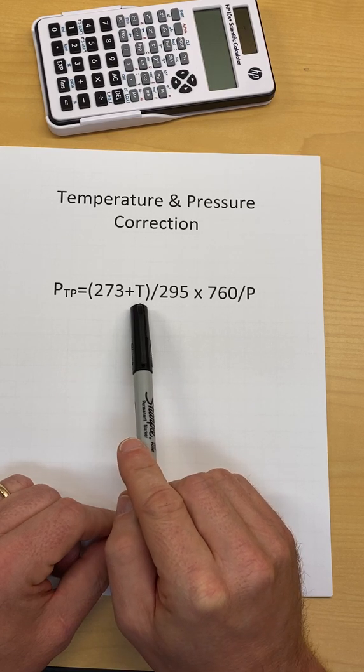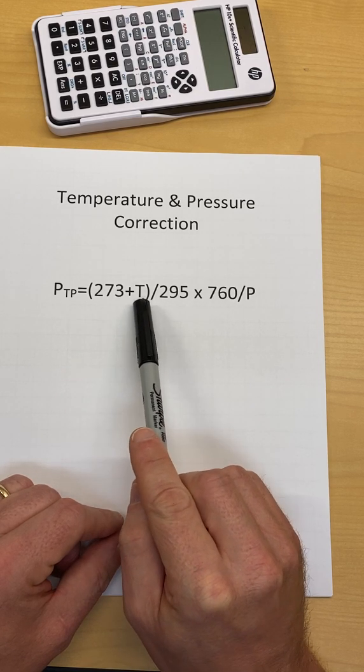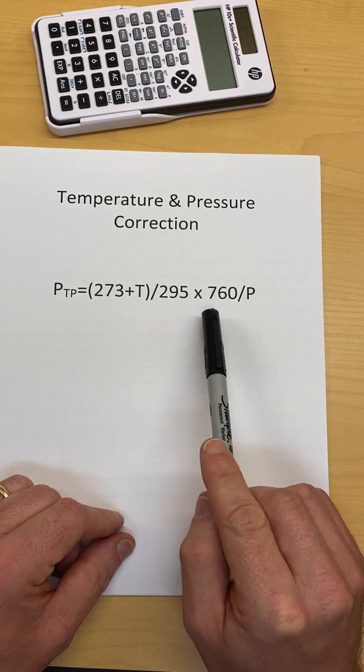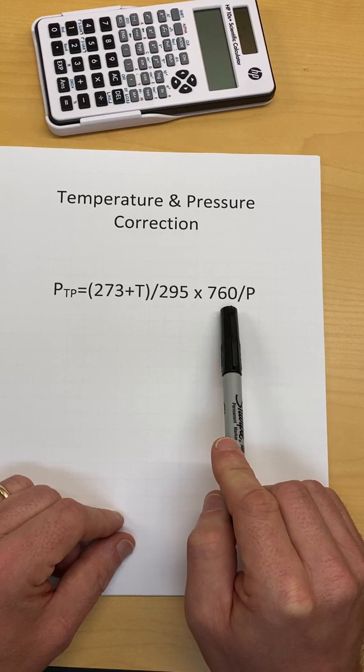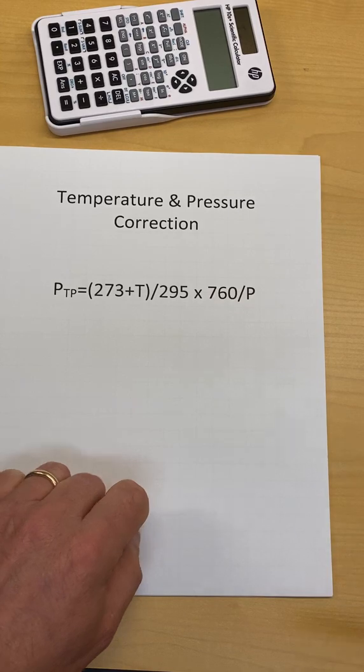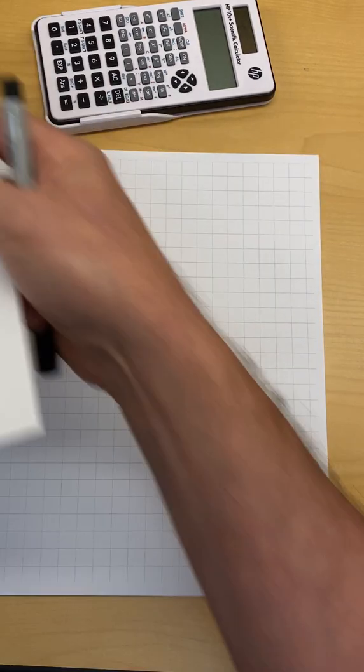This T is temperature in Celsius. There's a one-to-one scaling between Celsius and Kelvin, divided by 295 Kelvin times 760 millimeters of mercury divided by the pressure in millimeters of mercury.